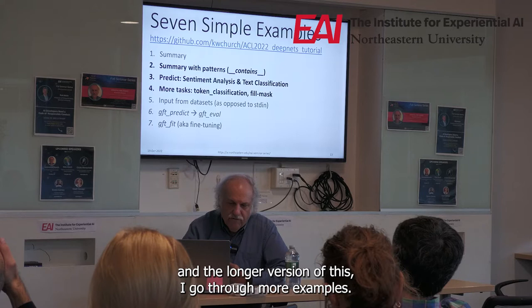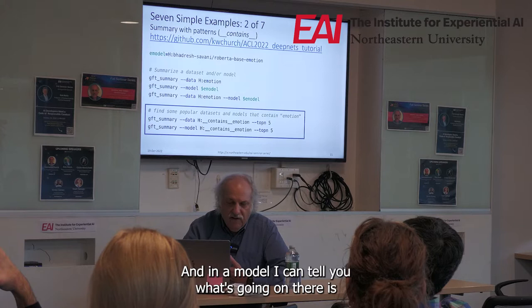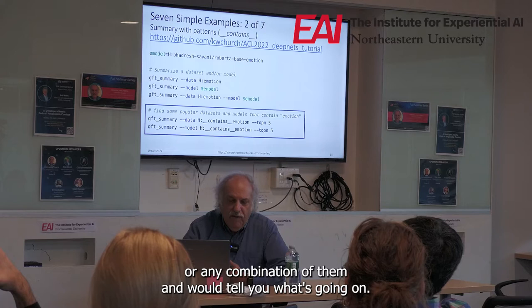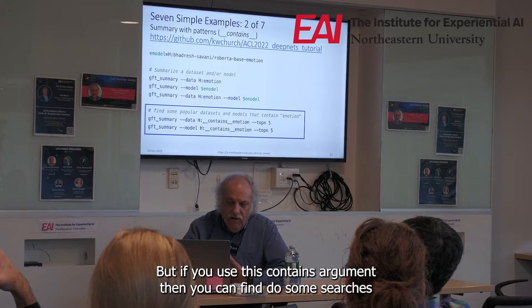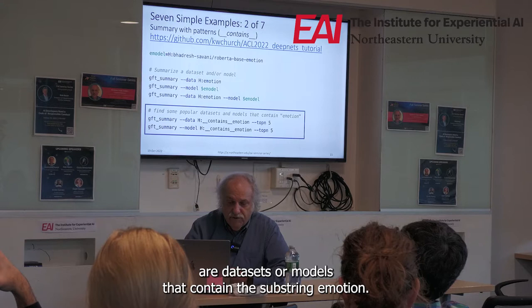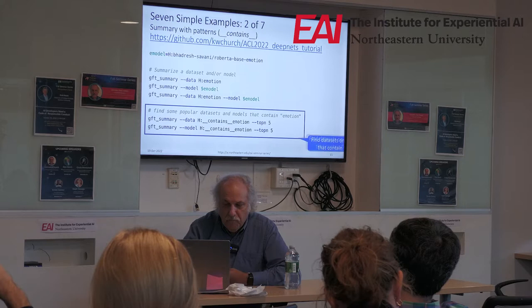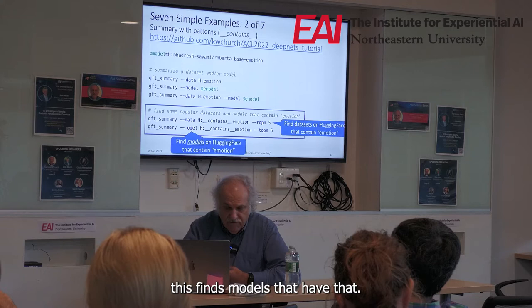In the longer version of the teaser I go through more examples. I'll just talk about three of the seven here. The summary function can tell you what's going on in a model or in a dataset — it takes pretty much any argument or any combination of them. If you use the 'contains' argument, it can do some searches. Things in the box would find the most popular datasets or models that contain the substring 'emotion.' For prediction, the 'I love you' example: by default it does sentiment analysis, but if you specify a model it does whatever the model does. In this case, the model outputs an emotion class.